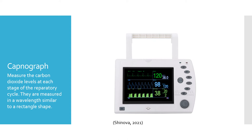Capnographs measure the carbon dioxide within each stage of the respiratory cycle. Carbon dioxide levels are measured in wavelength form; the wavelength takes on a rectangular shape, and any changes within the rate will be shown by the wavelength. This will be mainly used during surgery.